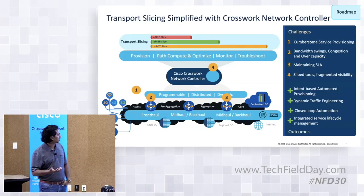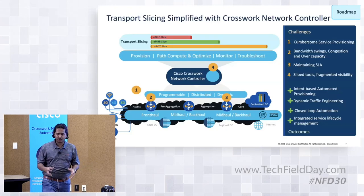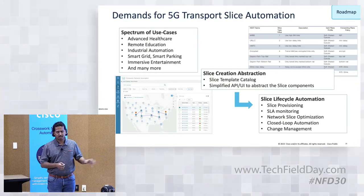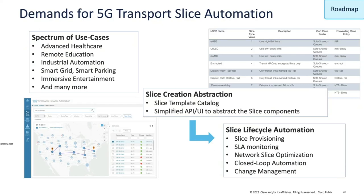What Crosswork Network Controller is bringing is all these silo tools coming together. The spectrum of use cases we see are in advanced healthcare, remote education — like during the pandemic when we saw a lot of remote work and schools going remote — industrial automation, which is key because you have mMTC or digital car experiences. Everybody needs a reliable connection to their transport, whether from mobile radios towards data center sites. Immersive entertainment and gaming solutions also have specific requirements for a specific amount of time, and that's where transport slicing becomes so critical.